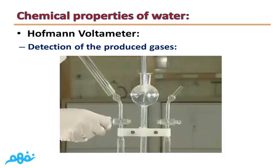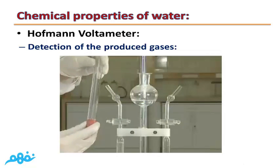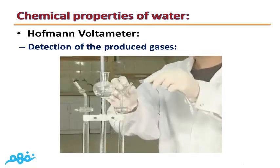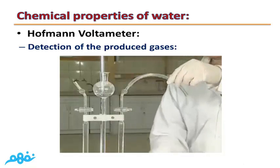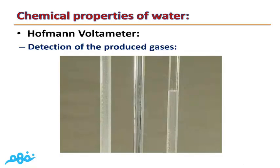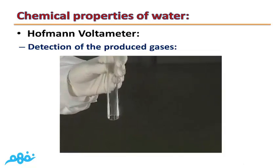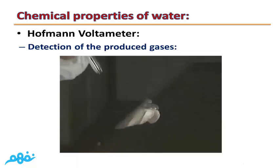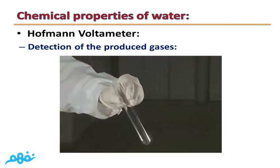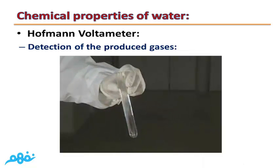Detection of the produced gases: we can collect the gas produced at the cathode in one tube and the gas evolved at the anode in another tube, then test for both gases. By approaching a burning match to the cathode gas, it will burn with a pop sound — so it is hydrogen gas. The gas that helps burning glow more is oxygen, so the gas evolved at the anode is oxygen, while the gas at the cathode is hydrogen.